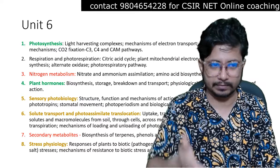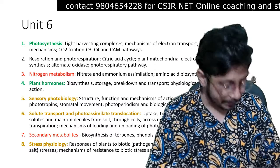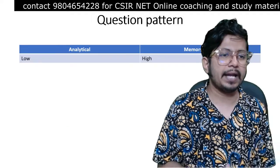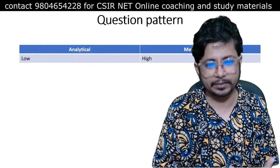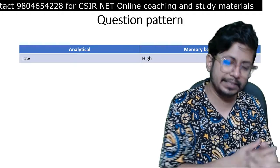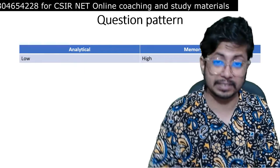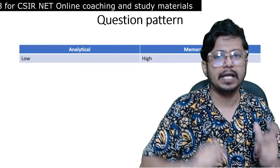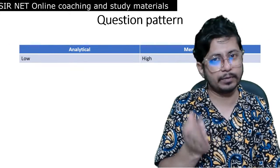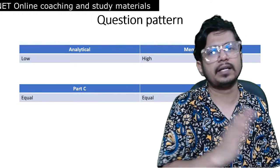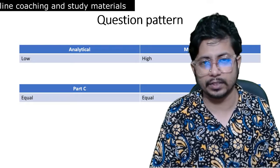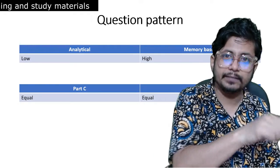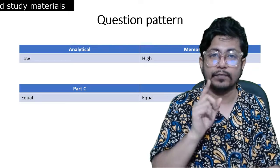Now let's move on to the question pattern for CSNA Unit 6 Plant Physiology. There are both analytical and memory-based questions, but memory-based questions will be asked more often than analytical ones — because for plant hormones, for example, you need to remember the names and signaling processes. Memory-based question weightage will be a little higher. From Unit 6, you can expect an almost equal number of Part B and Part C questions, and Part C questions will also include memory-based portions.